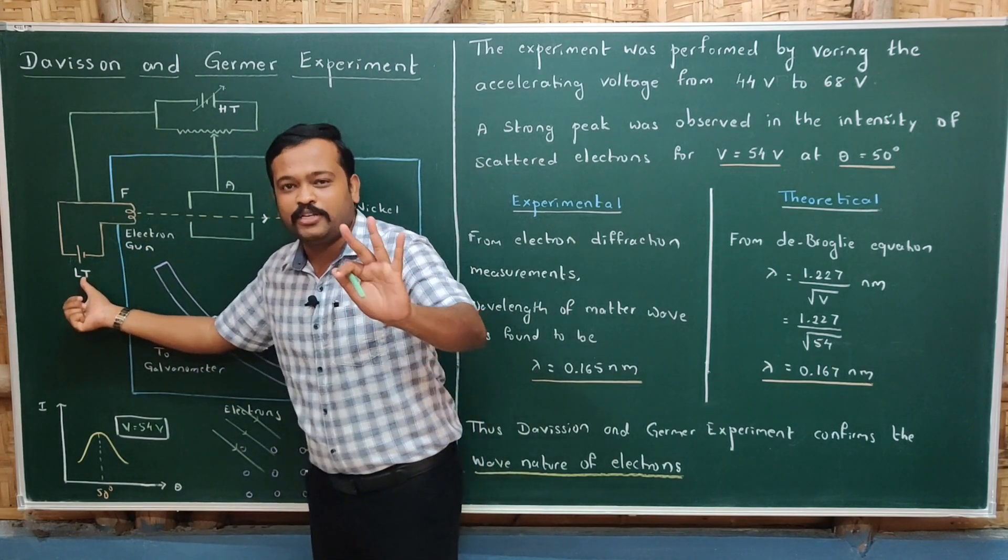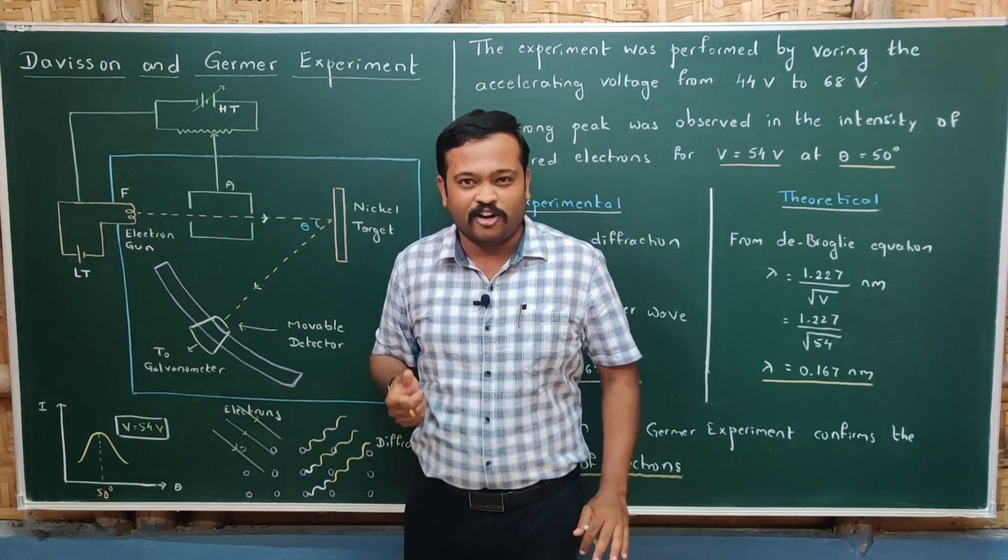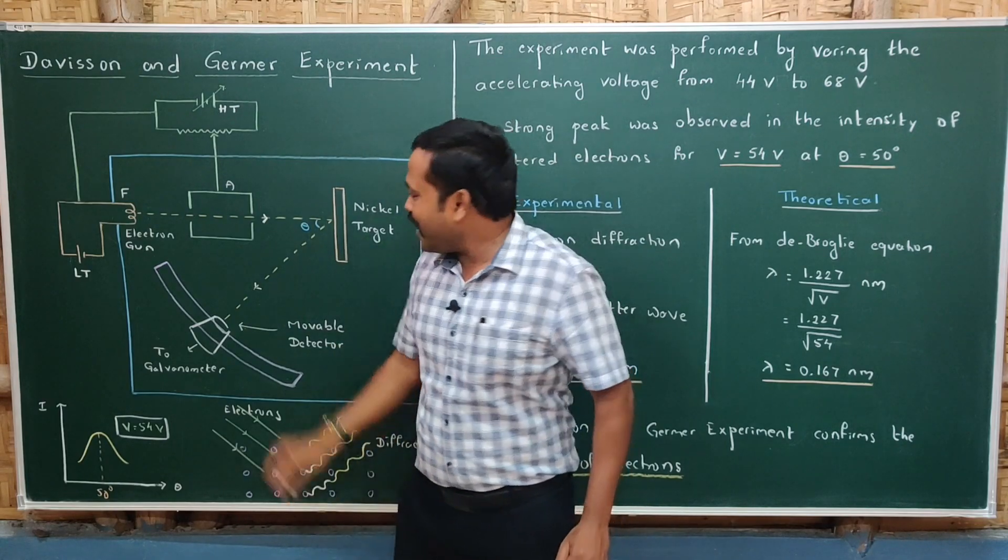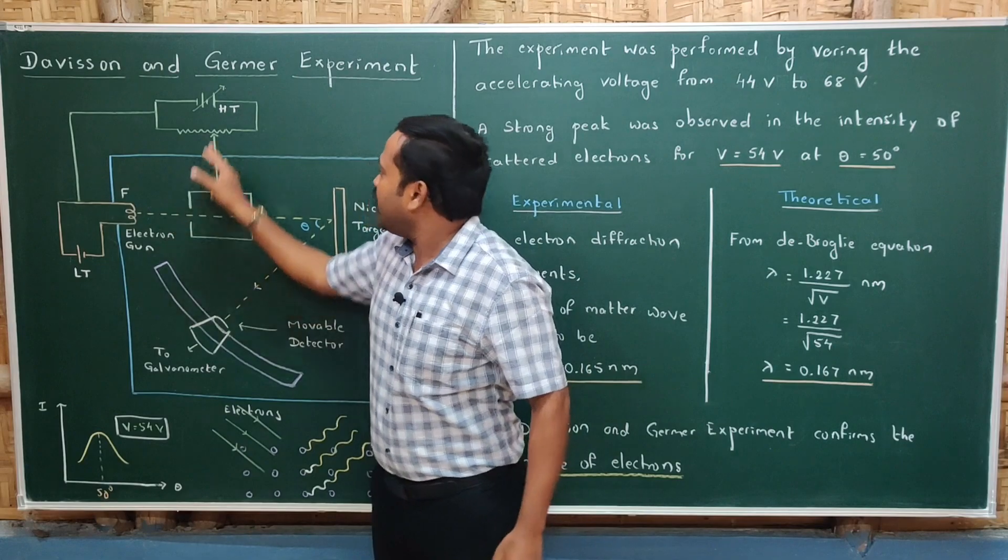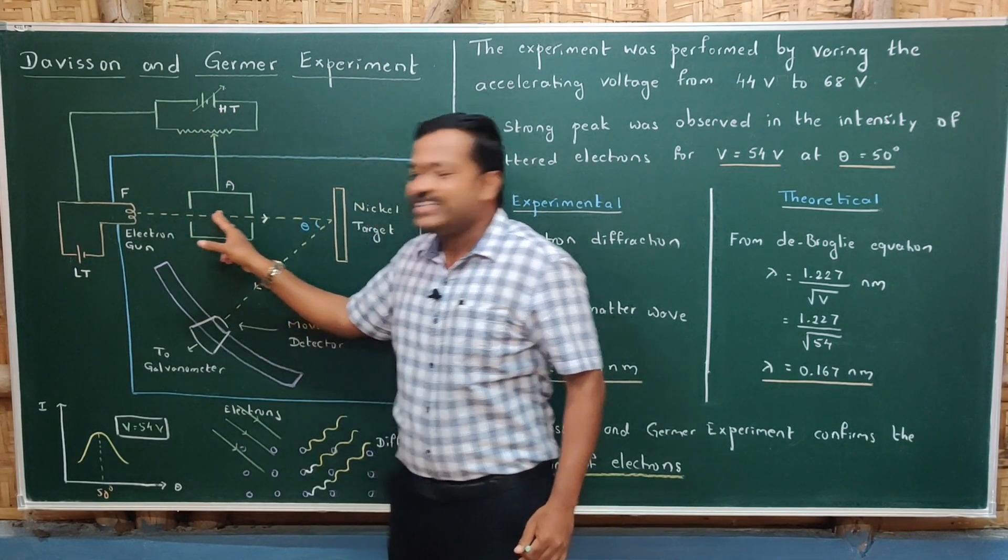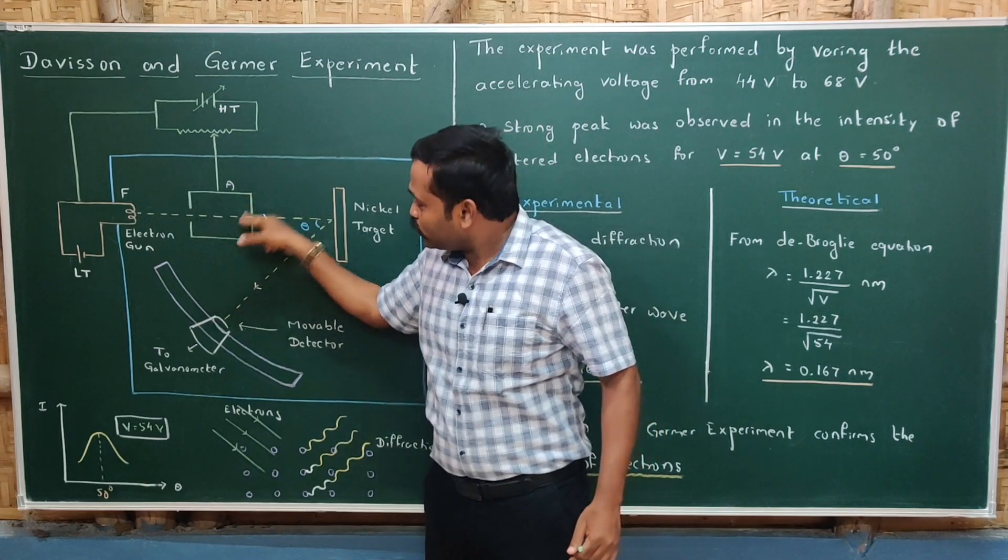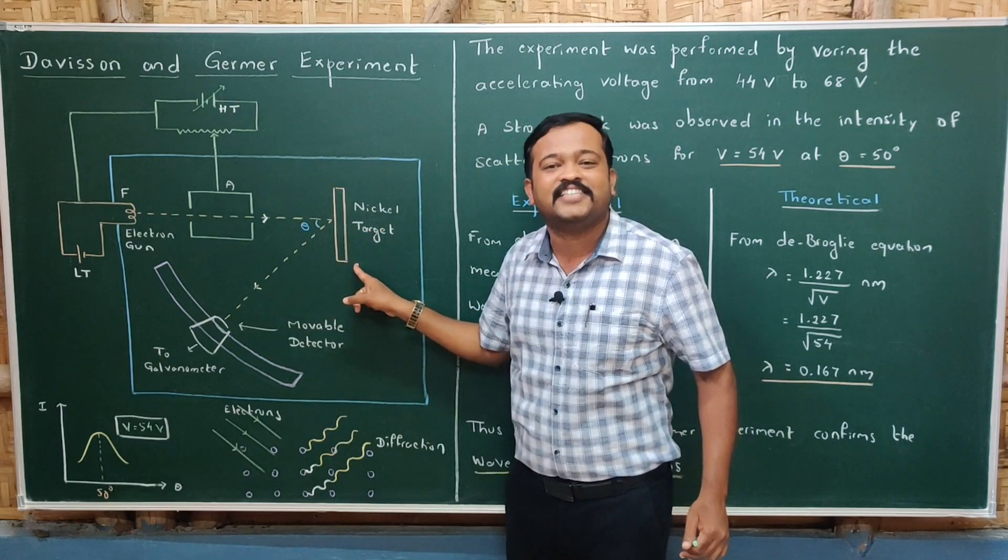This is the reason why barium oxide is coated on tungsten filament. When this electron gun is heated by a low-tension battery, for example 6 volts, the electrons are emitted from the electron gun like bullets. And these emitted electrons are accelerated with the help of a high-tension battery and passed through a cylinder with a small hole and made to fall on the nickel target.